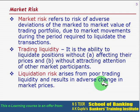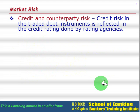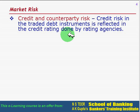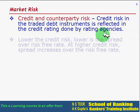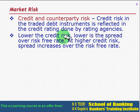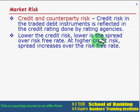What is counterparty risk or credit risk as part of market risk? Credit risk in traded debt instruments like bonds and debentures is reflected in credit ratings done by rating agencies. Rating agencies may downgrade those bonds or debentures. Lower credit risk means a lower spread over the risk-free rate; at higher credit risk, the spread increases over the risk-free rate. When risk is low the spread is also low, and when risk is high the spread can also be high.